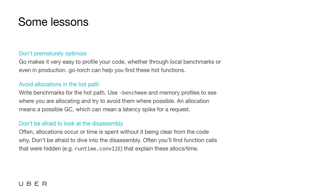Some of the lessons: first, don't optimize prematurely. Profile your code, find what is actually causing your code to be slow, and that's what you need to focus on. Go makes it really easy to profile your code, so take advantage of the tools. Second, avoid allocations in the hot path. We saw the difference between the 16-allocation version versus the two-allocation version — we went from over 5,000 nanoseconds to 333, more than an order of magnitude improvement. Try to avoid them in the hot path, and one of the easiest ways is to give your slices a predefined capacity. Third, don't be afraid to look at the disassembly. You don't have to understand everything — you just need to spot the big numbers and any runtime function calls.